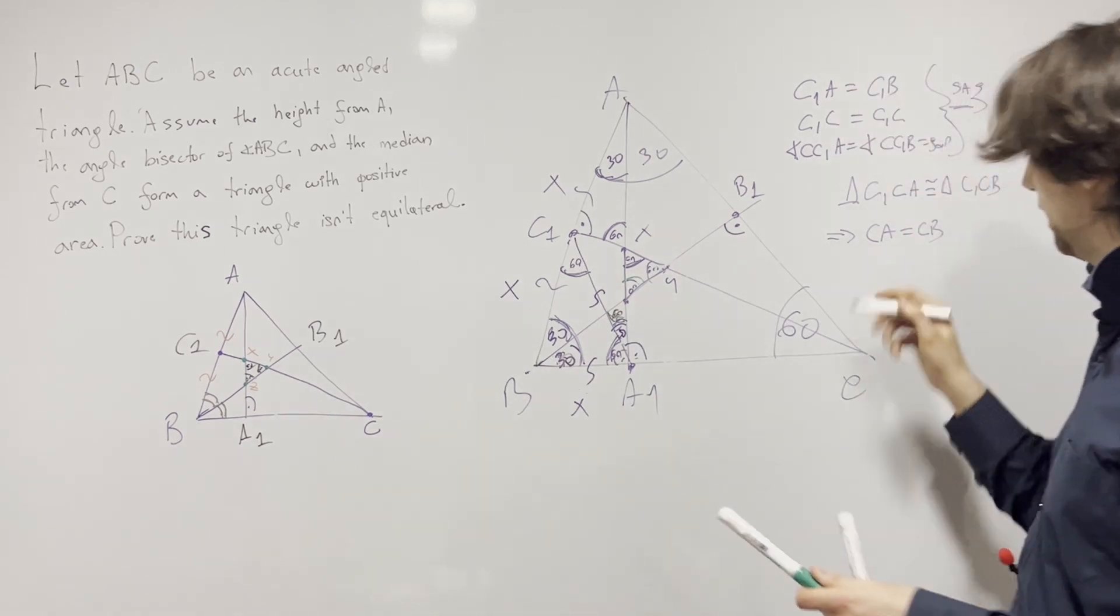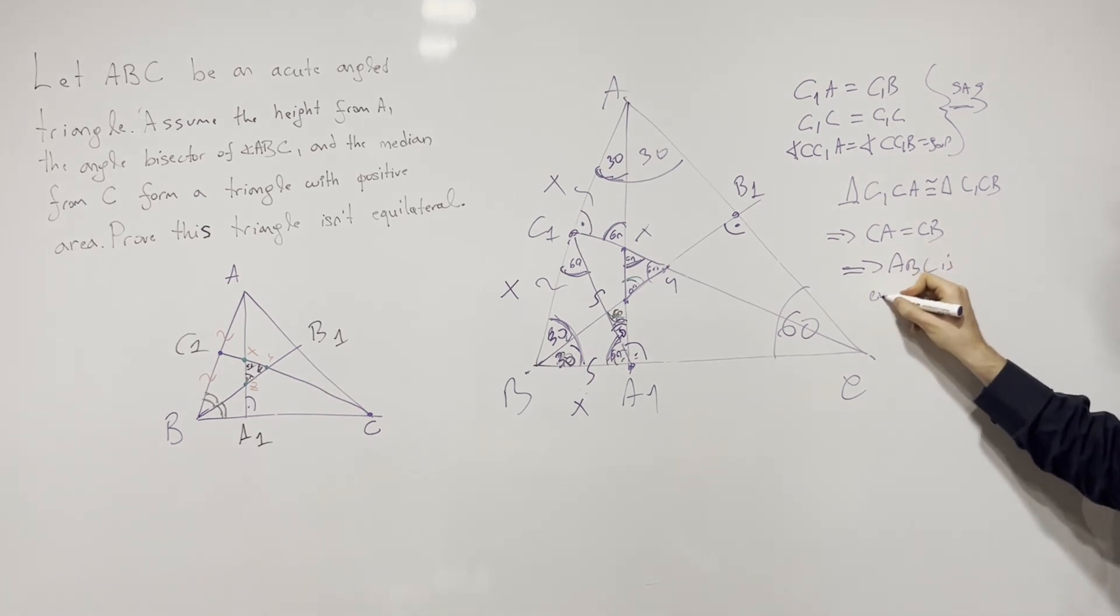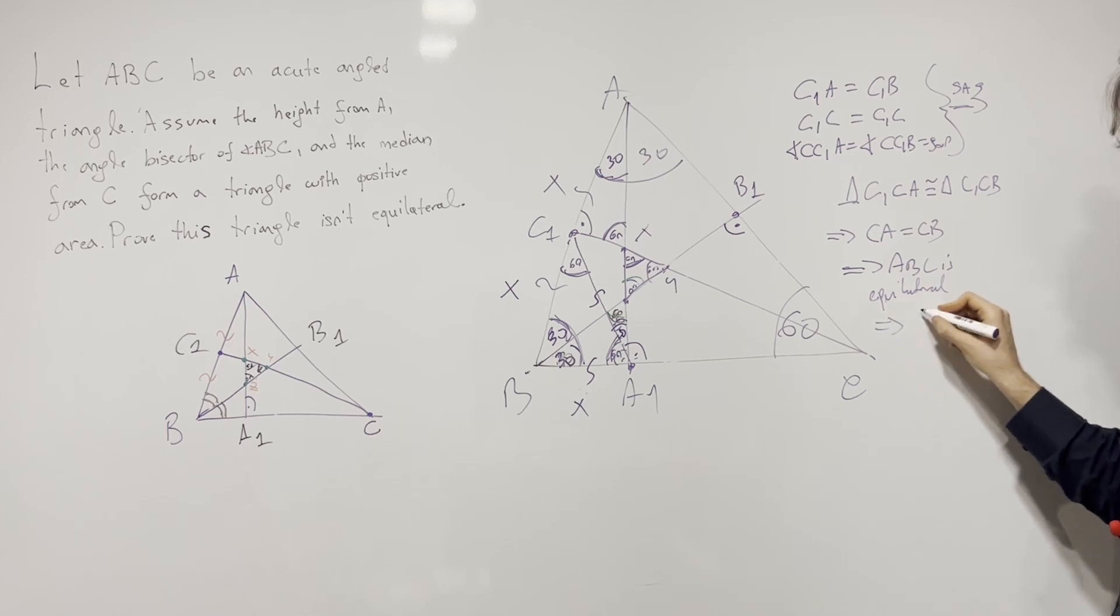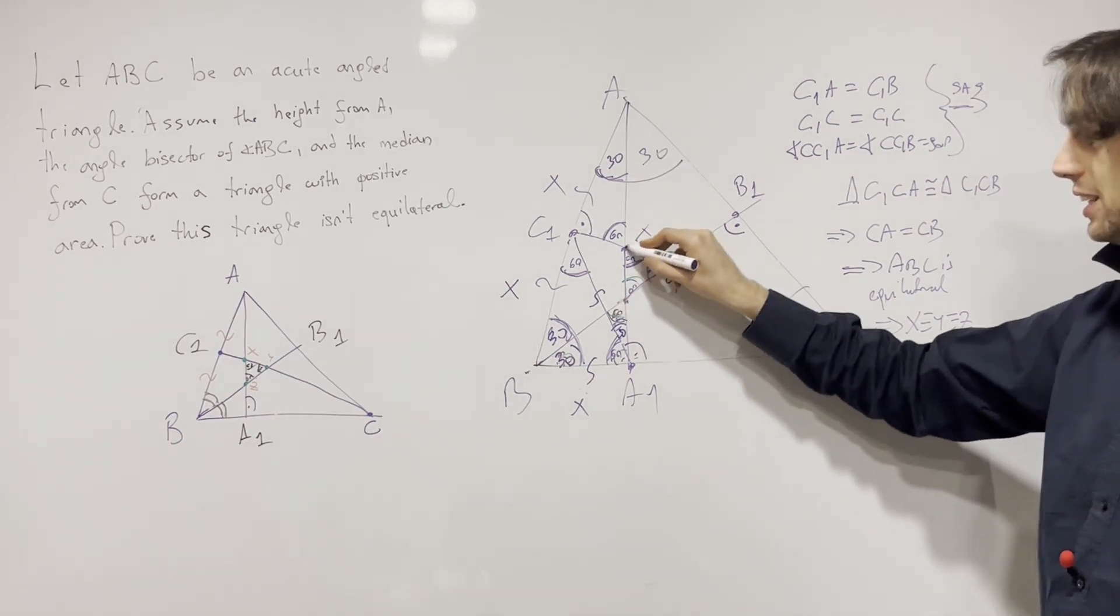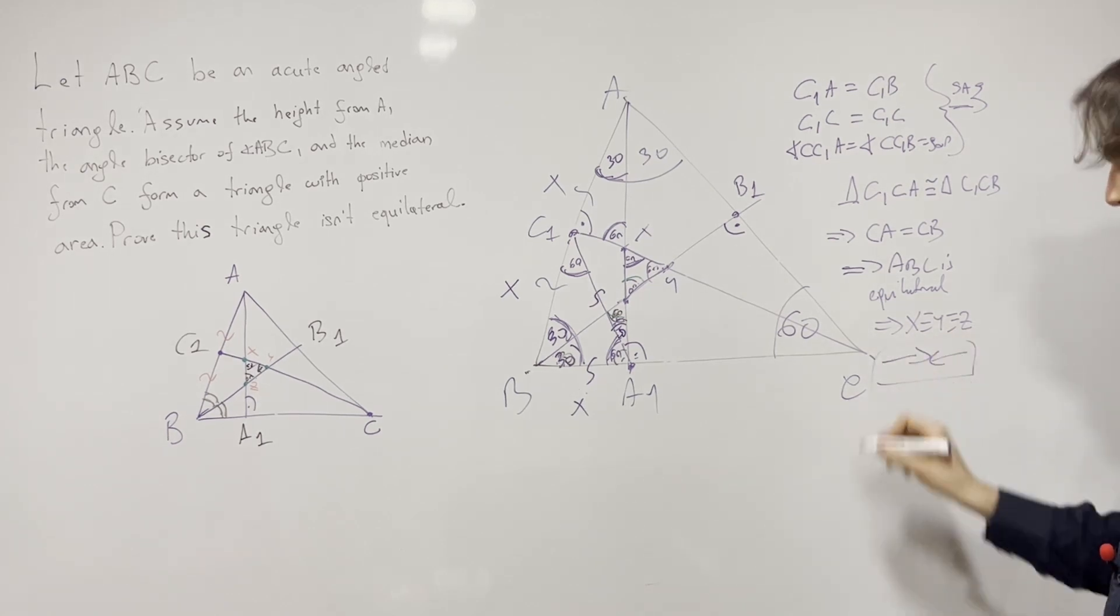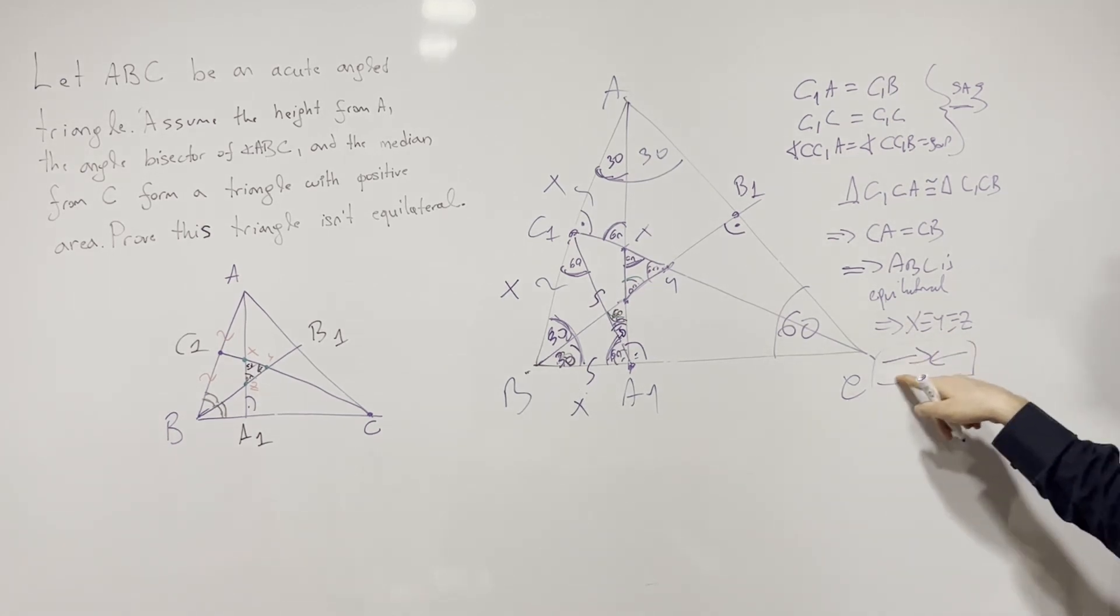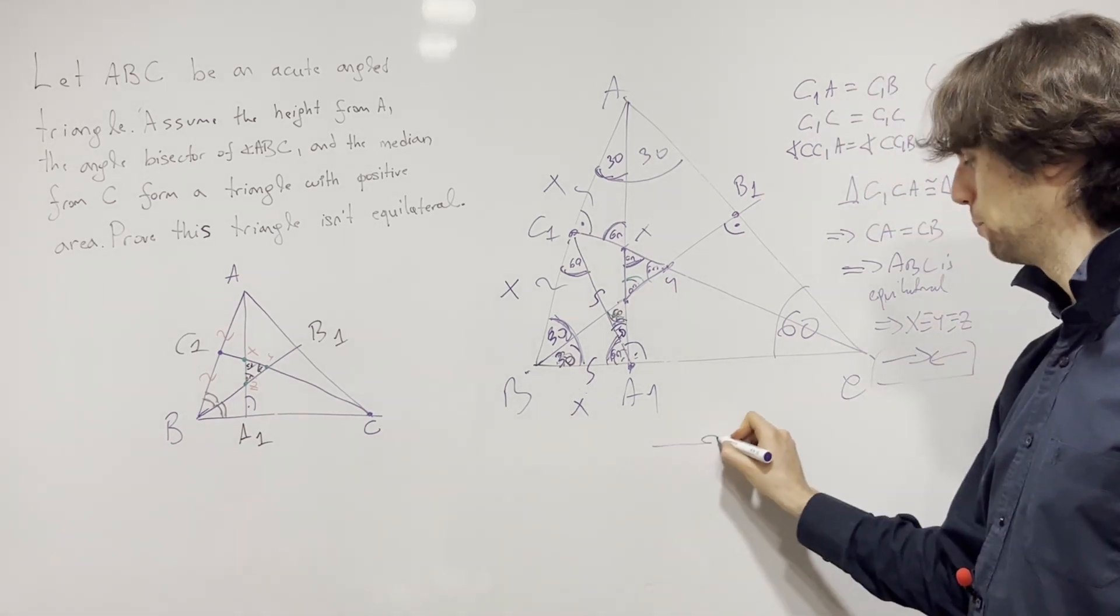Which would imply now, this implies now that ABC is equilateral, which implies that X is the same as Y is the same as Z, which implies all these points are the same. And then this gives us a contradiction. This is also a sign I think for a contradiction, this thing right here, not this is being circled around, it's like a collision, like boom boom, contradiction, at least I think that's what it is.